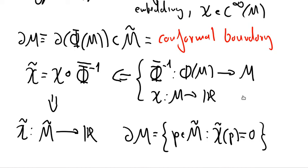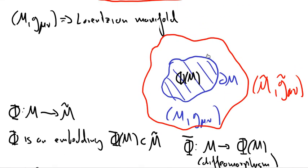So the main ideas are that we have introduced the conformal embedding, and with the conformal embedding we can define something called the conformal boundary. I will show you later how to use the conformal boundary to extract useful information about the global structure of our original manifold M. This will be achieved when we compute the conformal compactification of explicit solutions of the Einstein equations, which will happen in the next lecture.